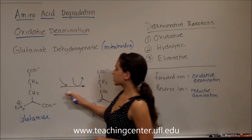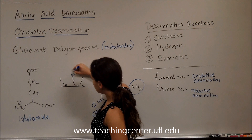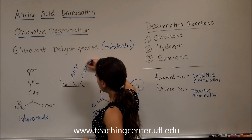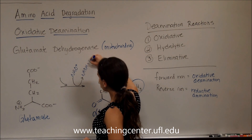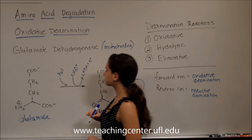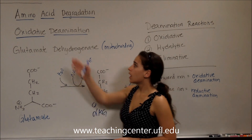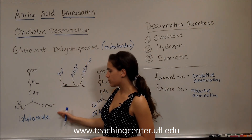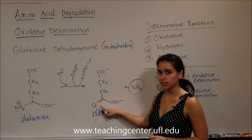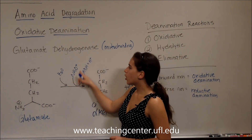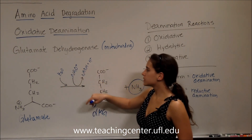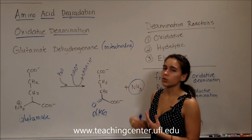For this reaction, we use NAD+, producing NADH + H, and we also use water. It's called oxidative because we oxidized this molecule — we made more bonds to oxygen, as you can see here. Our oxidizing agent, NAD+, became NADH, which became reduced.